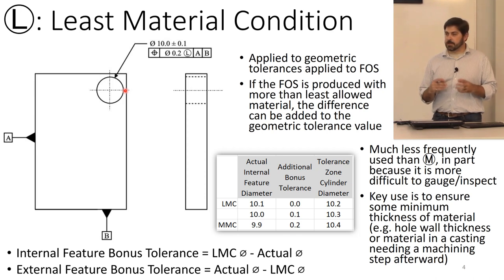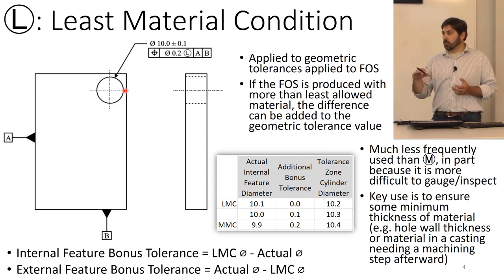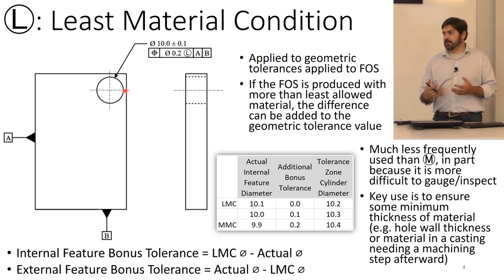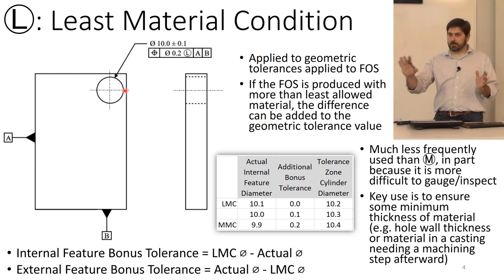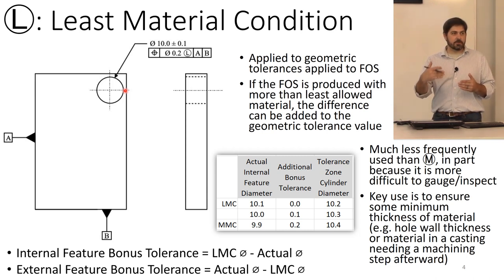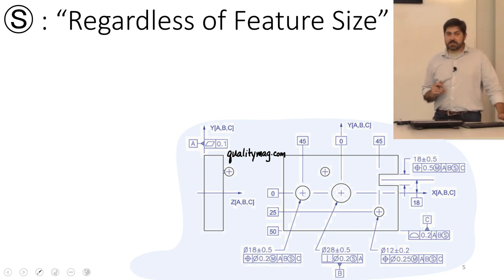Another place where least material condition may be used is with castings. If you've made a casting and then have a post-process where you come back and cut on that casting, the casting needs to have material there to cut on. It's not uncommon to see least material condition modifiers on a part that will have another process happen to it later where it gets cut on, because that ensures you have a certain minimum amount of material to cut on.